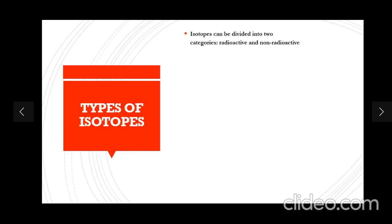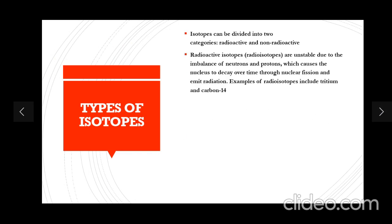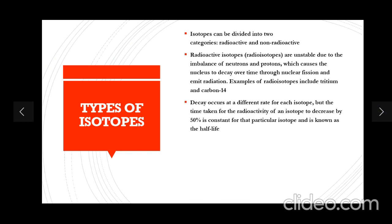Types of isotopes can be categorized into two types: radioactive and non-radioactive. Radioactive isotopes, or radioisotopes, are unstable due to the imbalance of neutrons and protons, which causes the nucleus to decay over time through nuclear fission and emit radiation. Examples of radioisotopes include tritium and carbon-14. Decay occurs at a different rate for each isotope, but the time taken for the radioactivity of an isotope to decrease by 50% is constant for that particular isotope, and is known as the half-life.